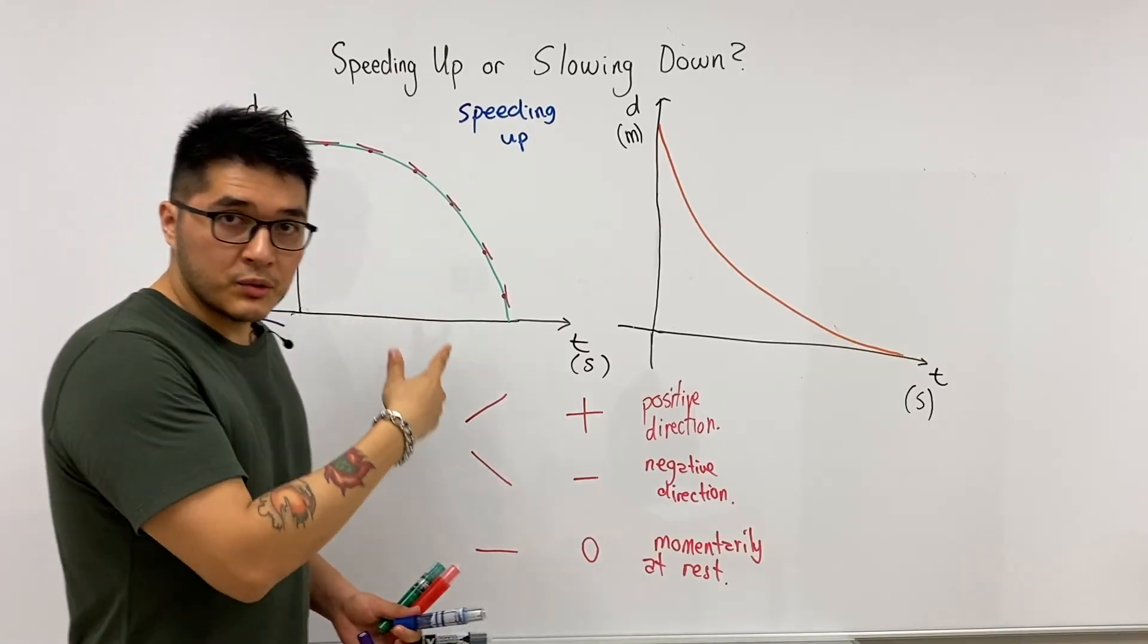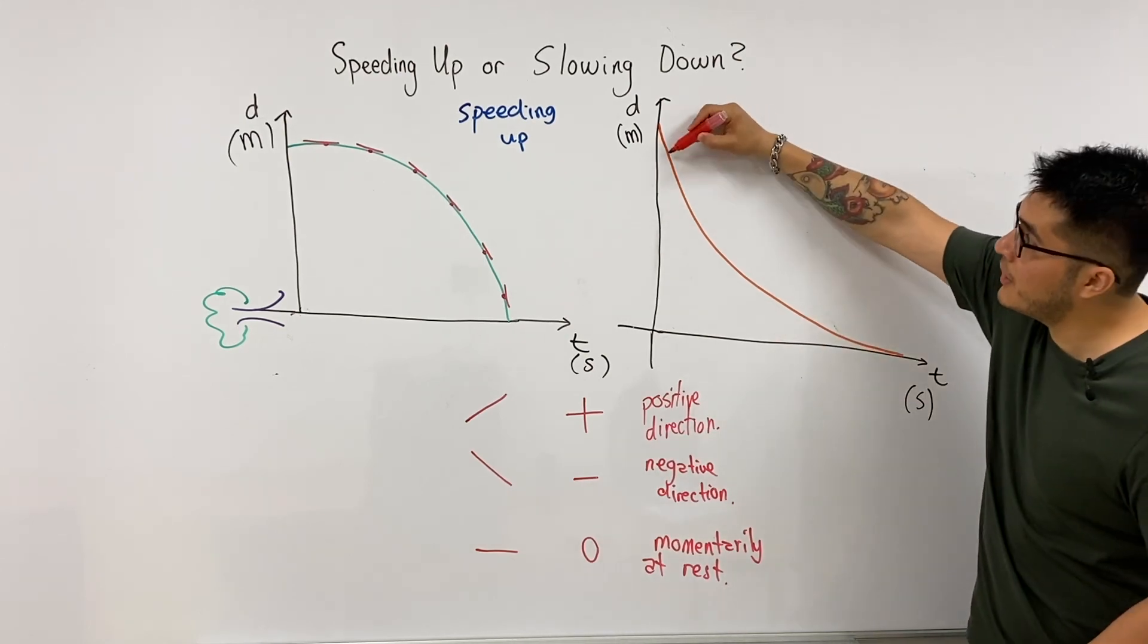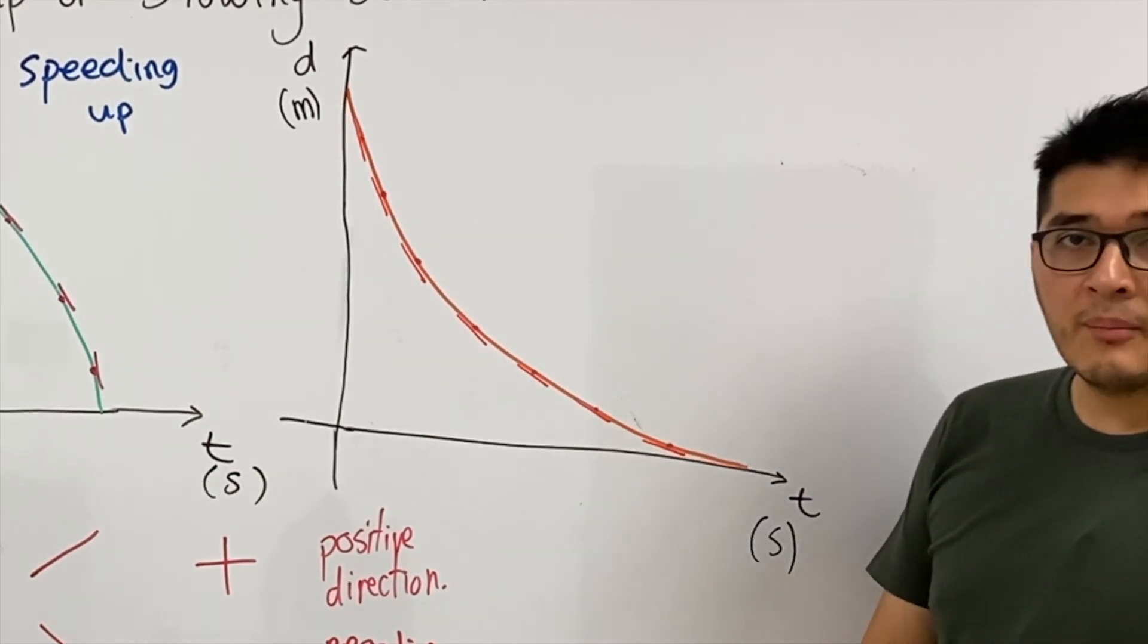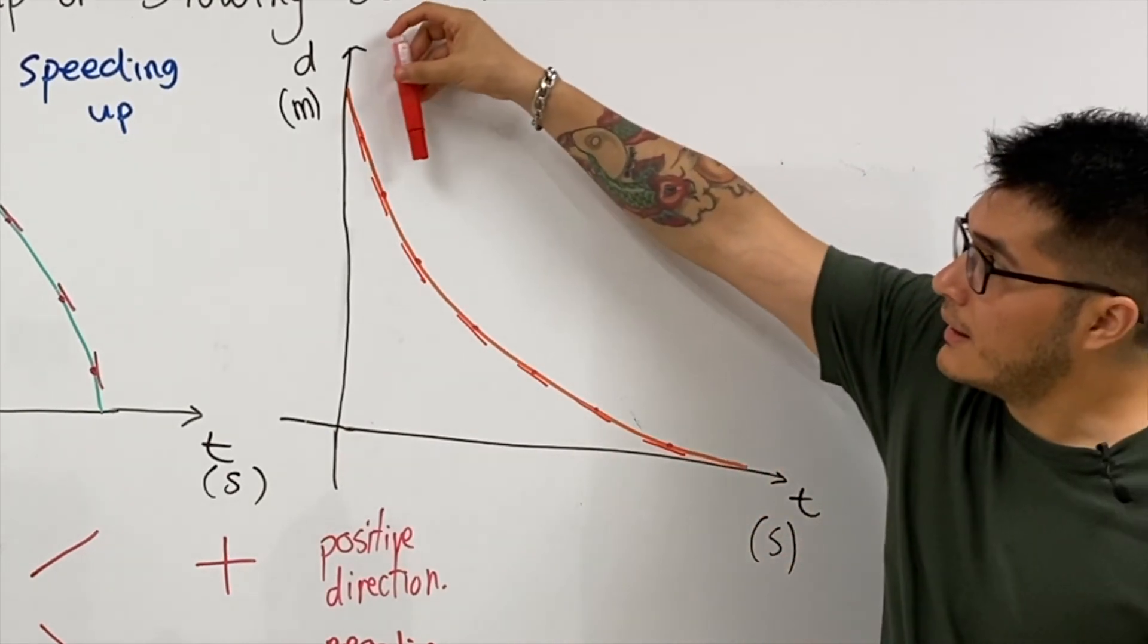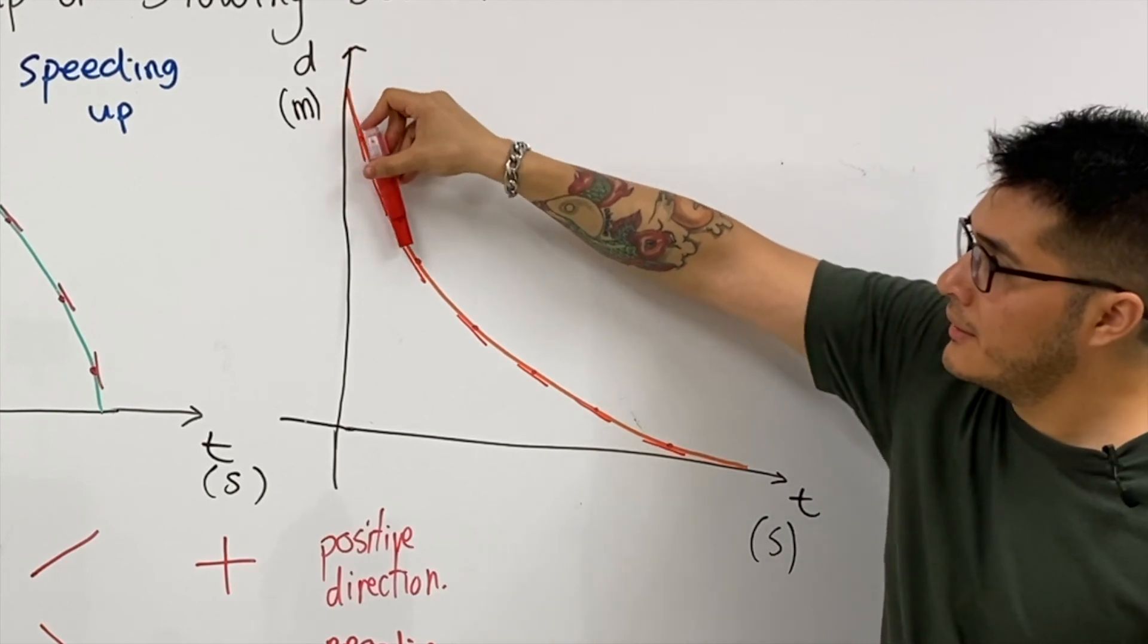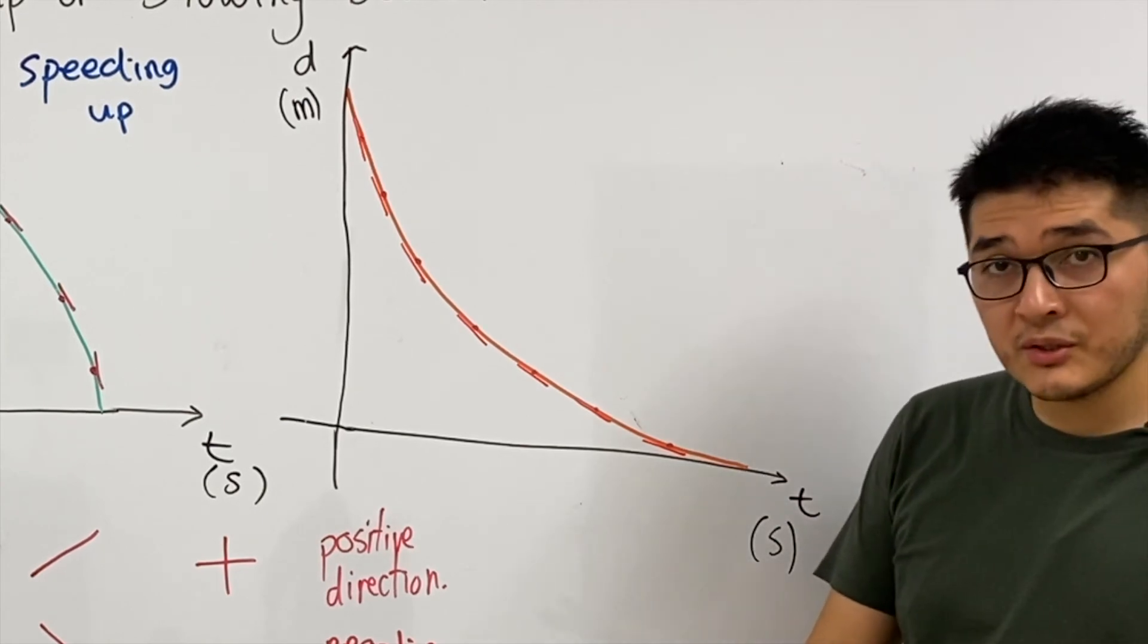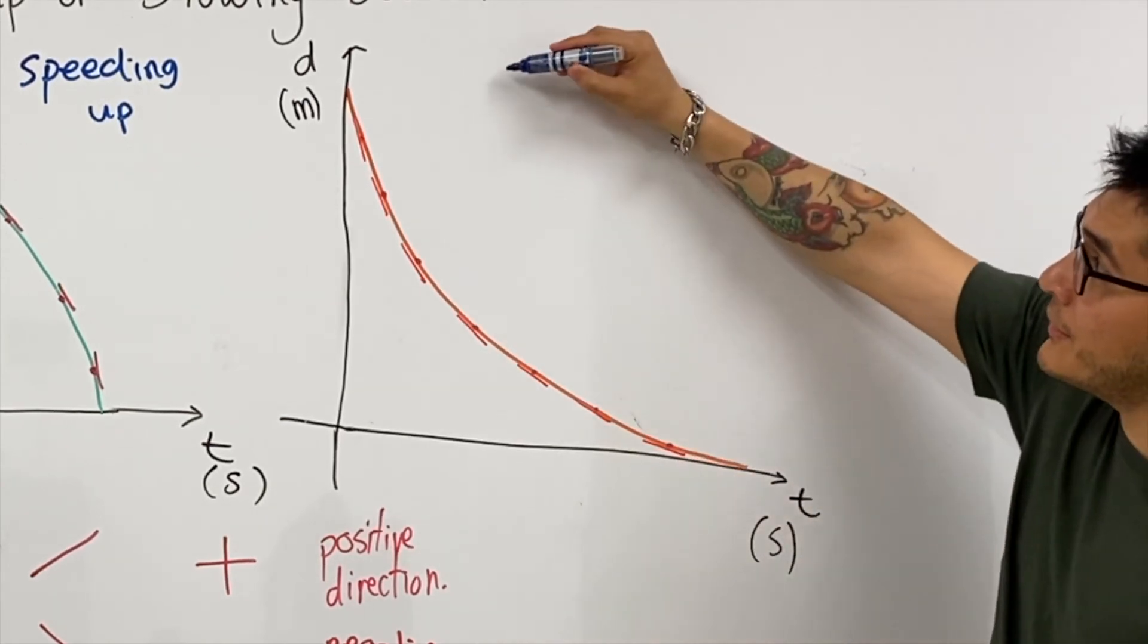And let's do the same thing for the next one. Again, we pick a few random points and we're going to draw the baby tangent. Now we're looking at the trend of the tangent as time moves forward. It initially begins with a very steep line, and as you move forward in time, the steepness begins to decrease. If this is the trend that's occurring, we can say that the object is actually slowing down.